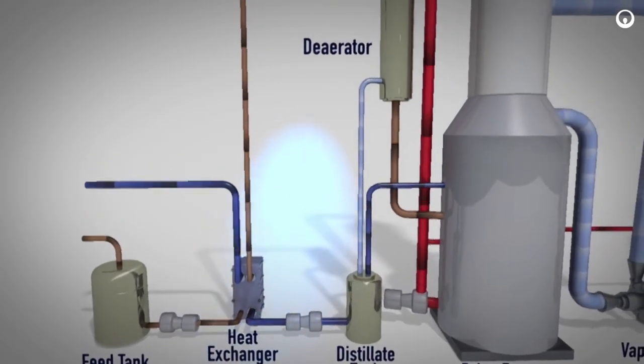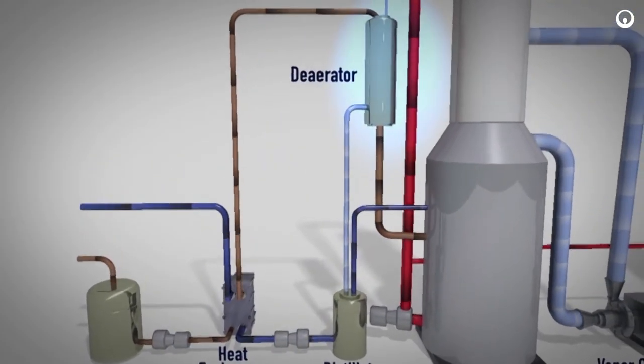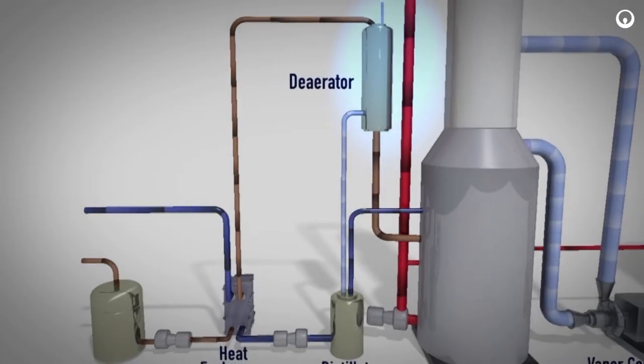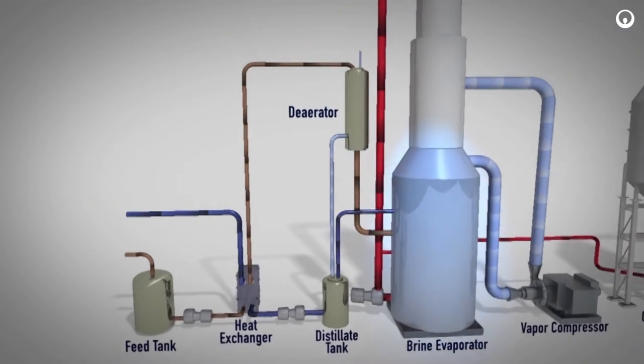The heated brine is then pumped up to the deaerator. In the deaerator, non-condensable gases such as carbon dioxide and oxygen are removed from the brine. The deaerated brine then flows into the brine evaporator sump.